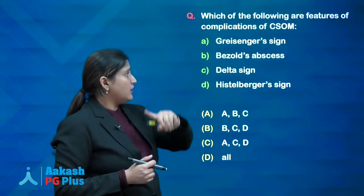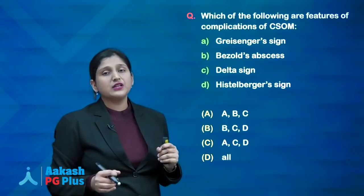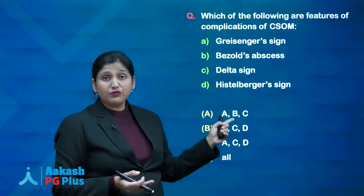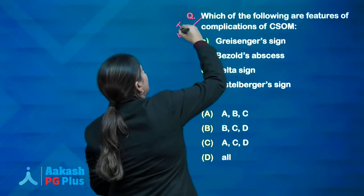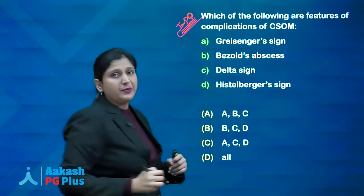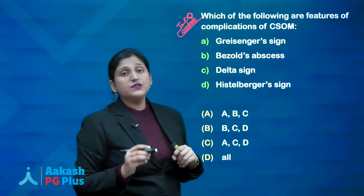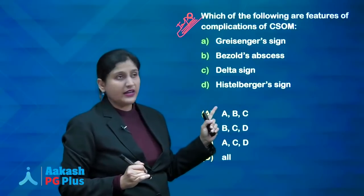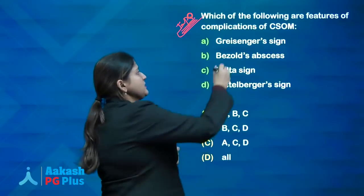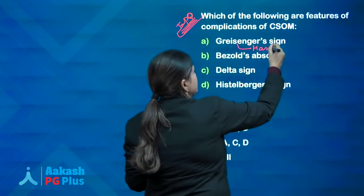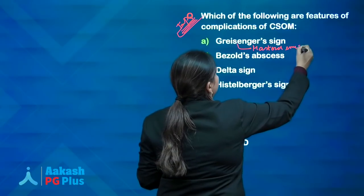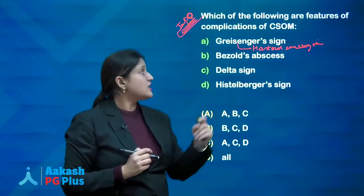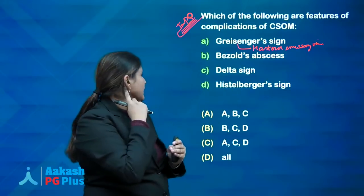An important topic: CSOM and its complications. They can be framed differently according to the age of the patient, pathways of spread, or the name of the complication. The question asks which are features of CSOM complications: Grisinger sign, Bezold's abscess, delta sign, and Hitzelberger sign. Grisinger sign is tenderness or redness in the post-auricular area due to thrombosis of mastoid emissary veins — present in lateral sinus thrombosis.